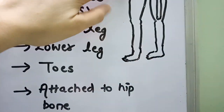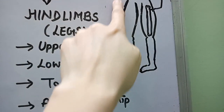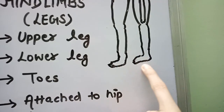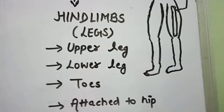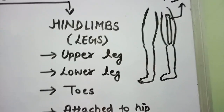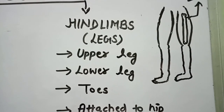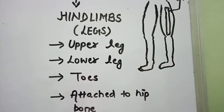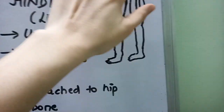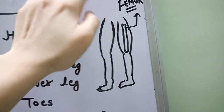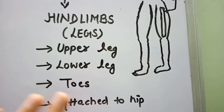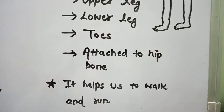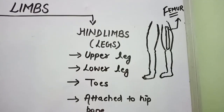Moving on to hind limbs — you can see the legs here. Hind limbs also consist of three different parts: upper leg, lower leg, and toes. Your hind limbs are attached to the hip bone, and they help us to walk and run.